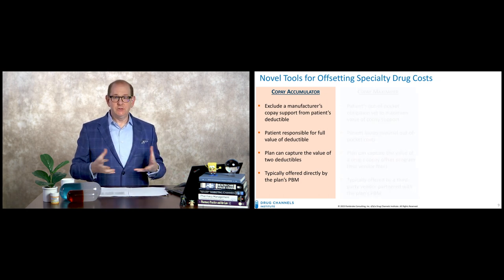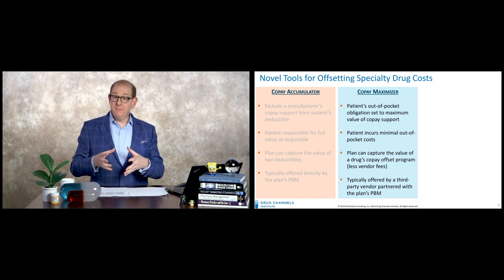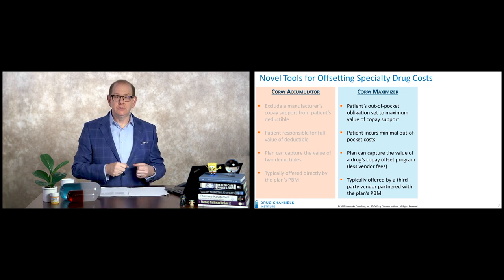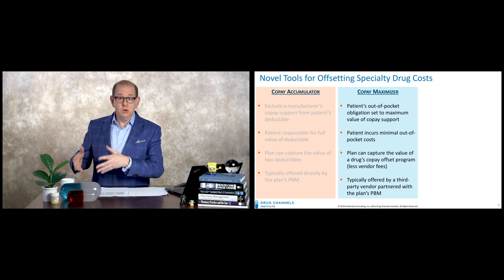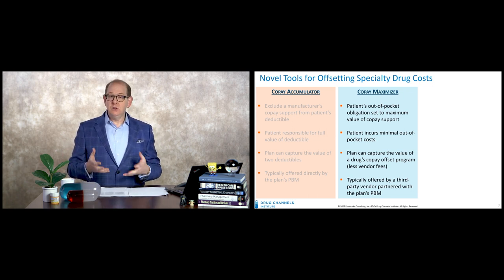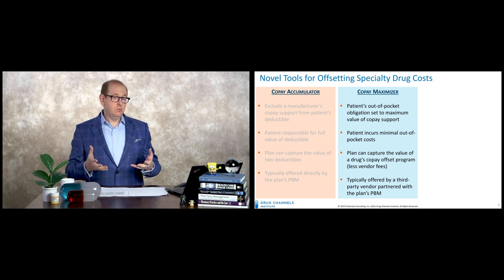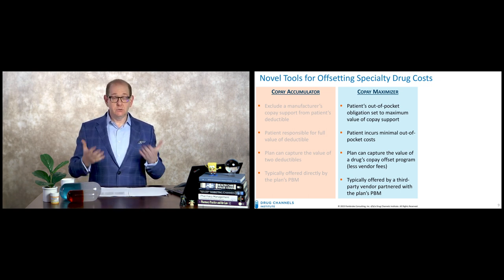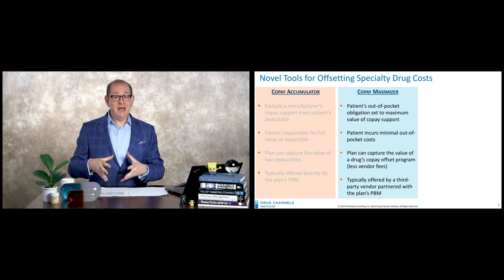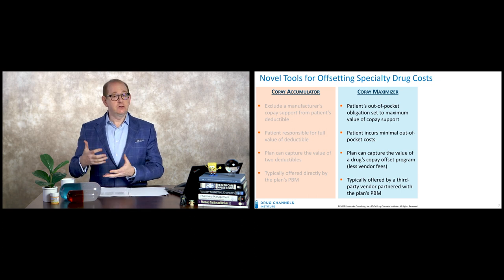The second is the copay maximizer. The concept here is that there might be more money in that copay support program beyond what the deductible is funding, so let's maximize it. Although the deductible could be $5,000, the copay program might actually be funded up to $24,000, so we're going to get the maximum value of that. The patient's out-of-pocket will essentially be set to the maximum value of that copay program, and the patient will incur minimal out-of-pocket costs. From the plan's perspective, they get the full value of that copay program applied to plan costs minus the vendor fees, which can be quite hefty.